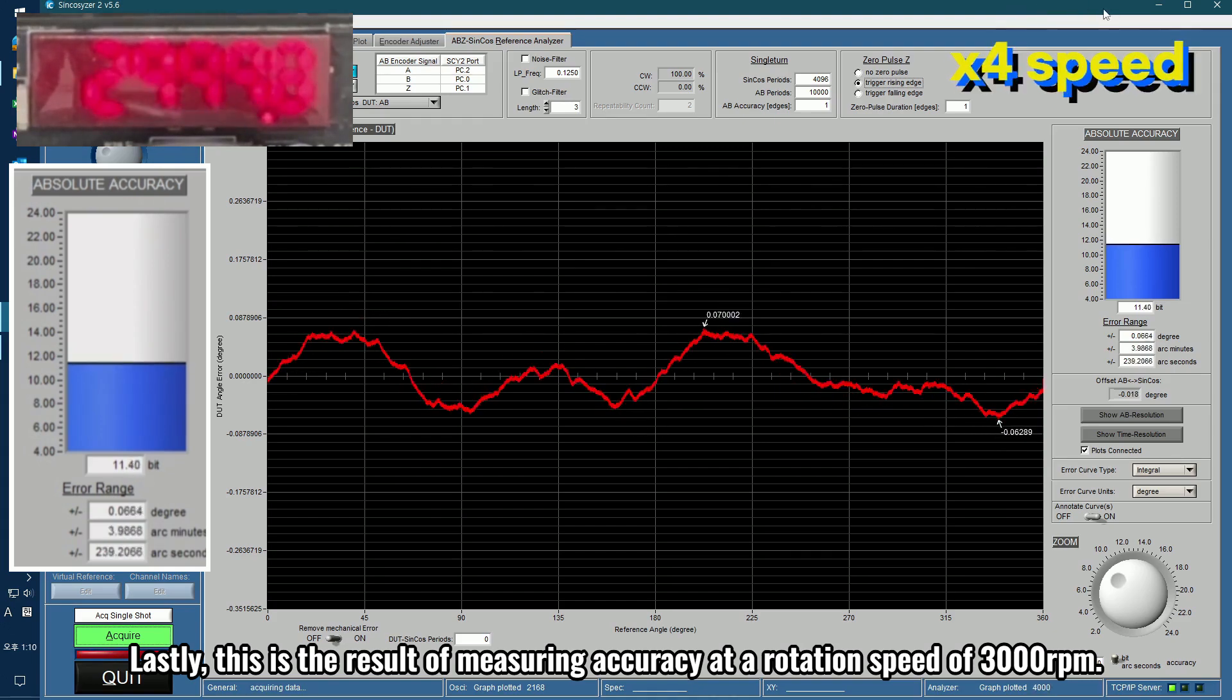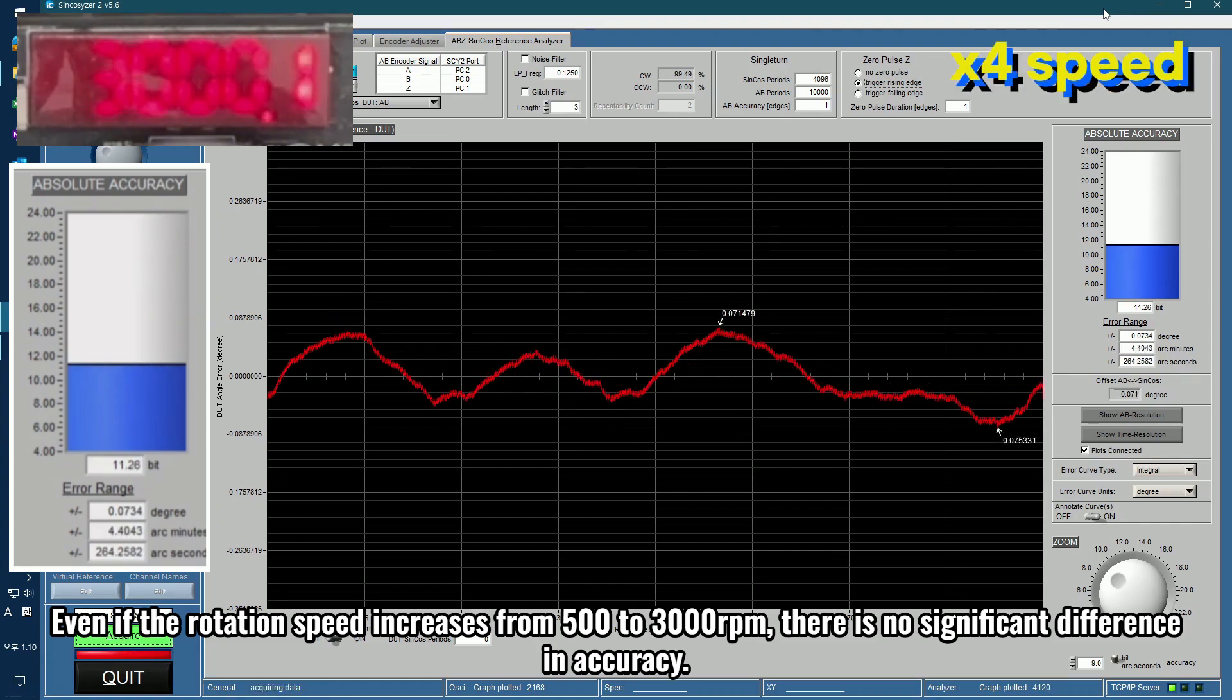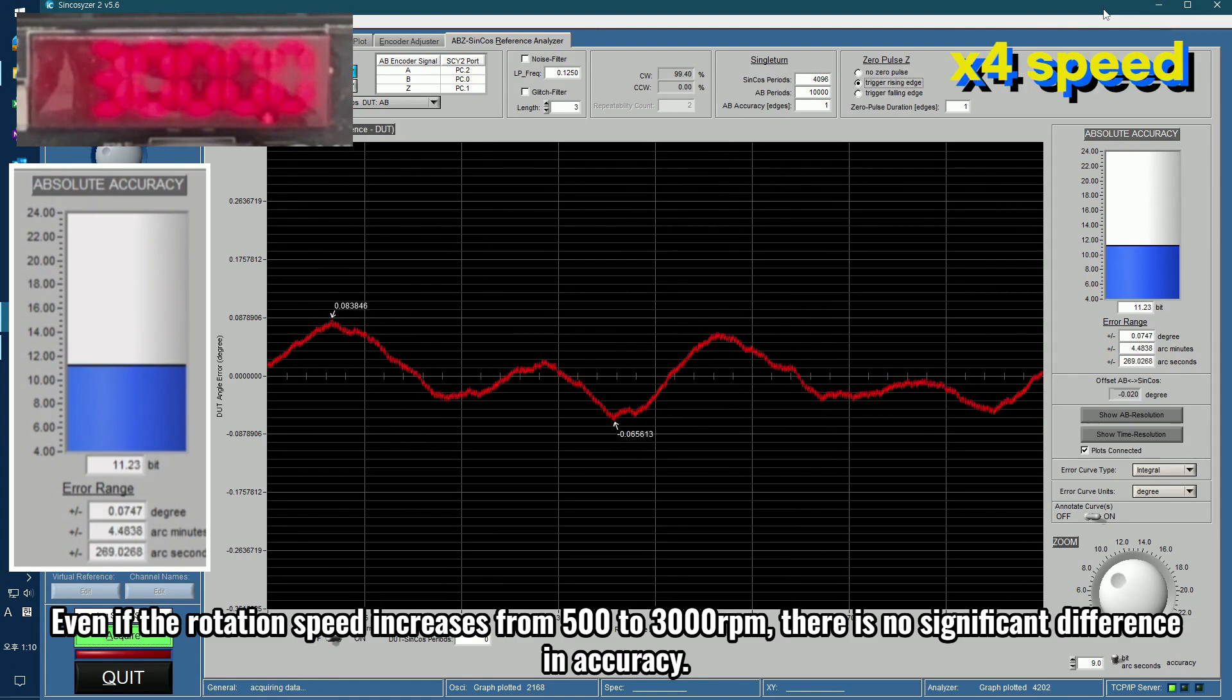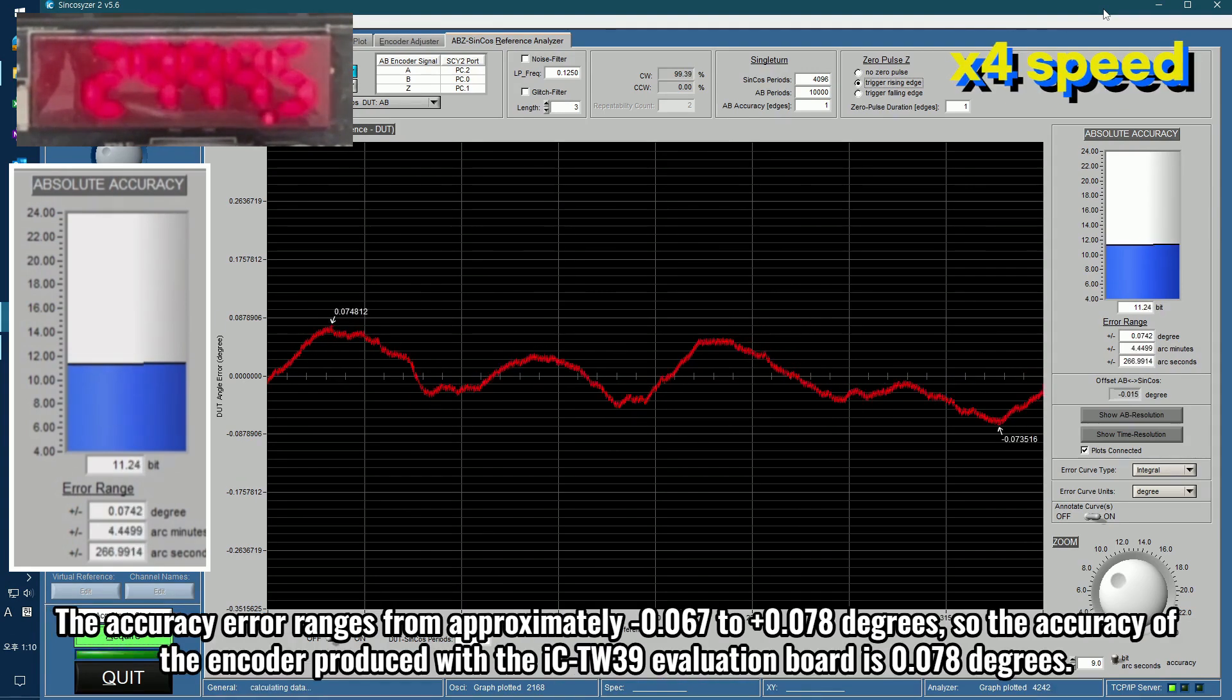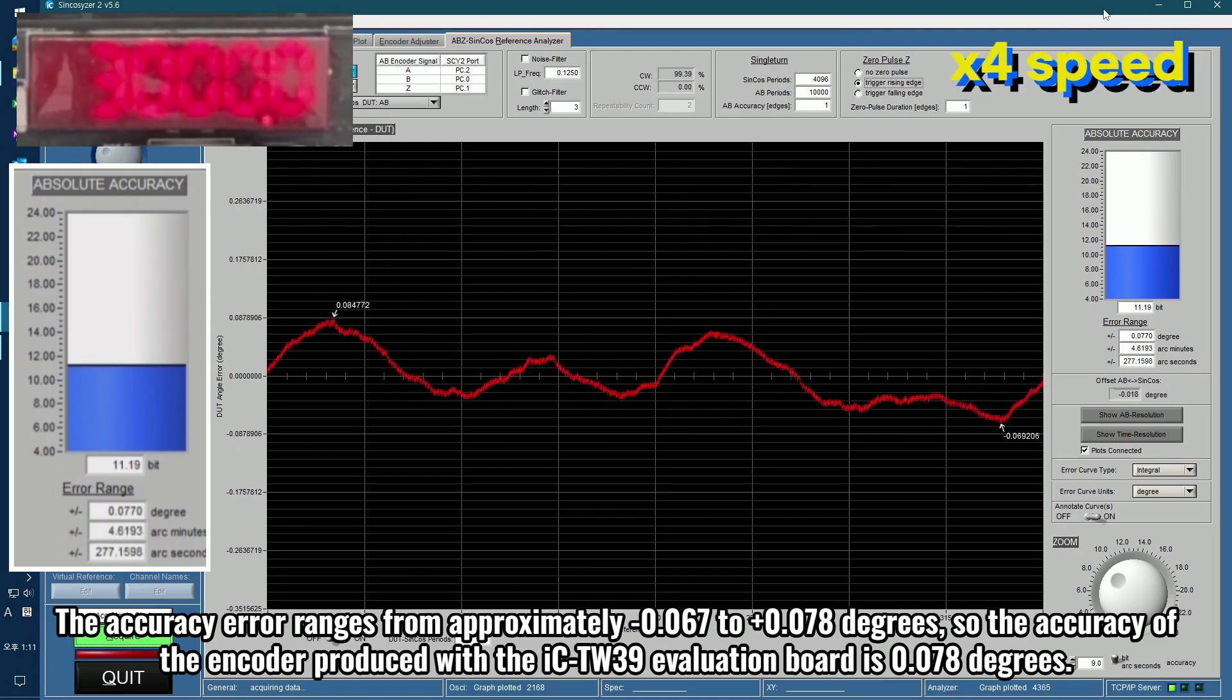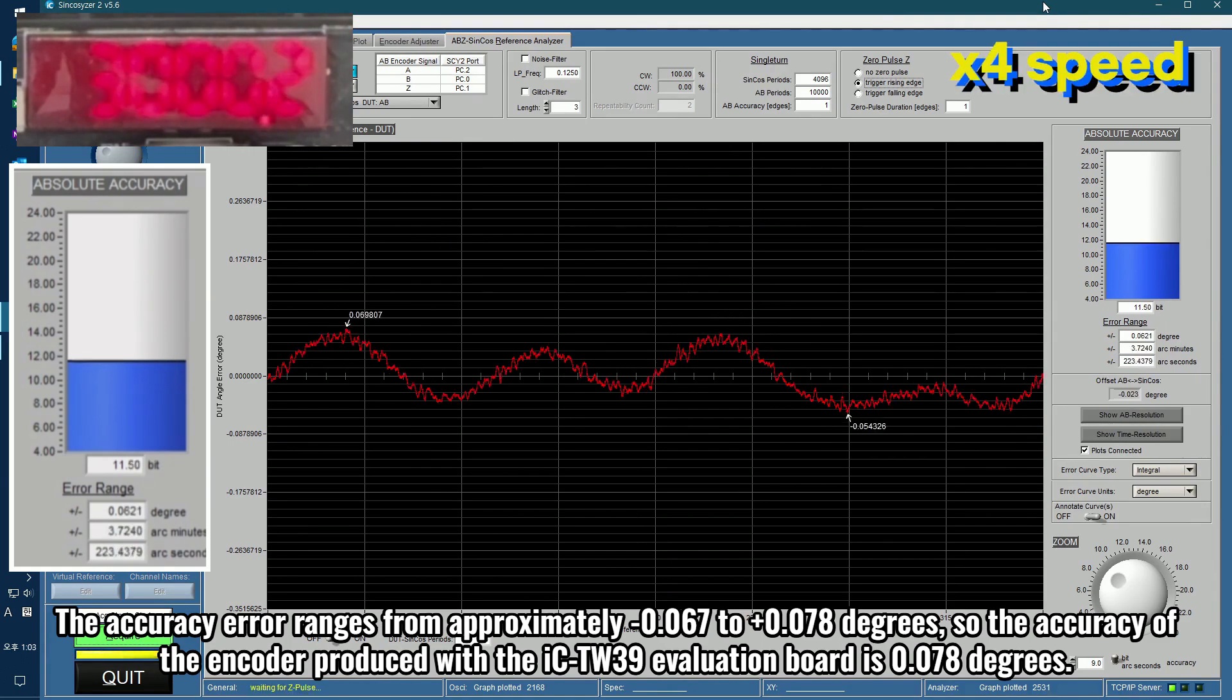Lastly, this is the result of measuring accuracy at a rotation speed of 3000 revolutions per minute. Even if the rotation speed increases from 500 to 3000 revolutions per minute, there is no significant difference in accuracy. The accuracy error ranges from approximately minus 0.067 to plus 0.078 degrees, so the accuracy of the encoder produced with the ICTW39 evaluation board is 0.078 degrees.